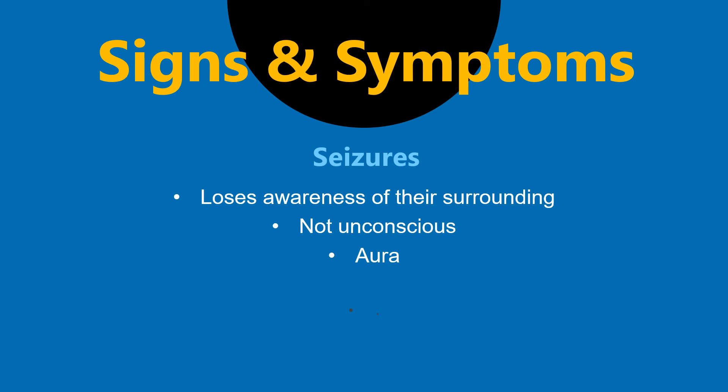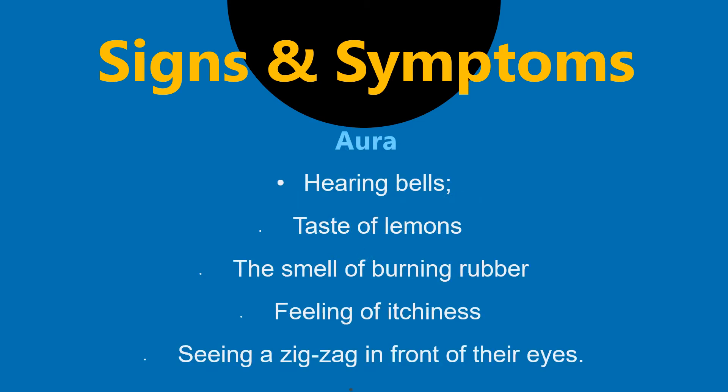An aura can be a taste, sensation, smell, or sound that usually alerts the patient that a seizure may be imminent. Examples of auras include hearing bells, a taste of lemons in the patient's mouth, the smell of burning rubber, a feeling of itchiness, and seeing a zigzag pattern in front of their eyes.